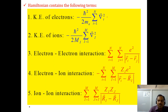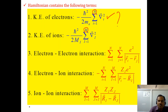The kinetic energy of the electrons is represented as minus h-cross squared by 2m, with summation over all the electrons. Suppose there are N number of electrons and M number of ions. In this manner we can represent the kinetic energy of the electrons and that of the ions.